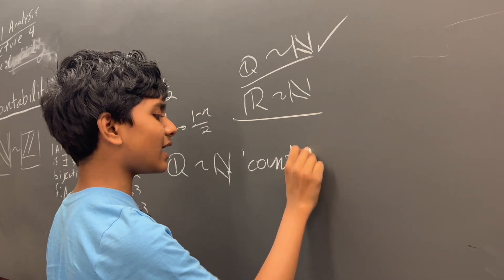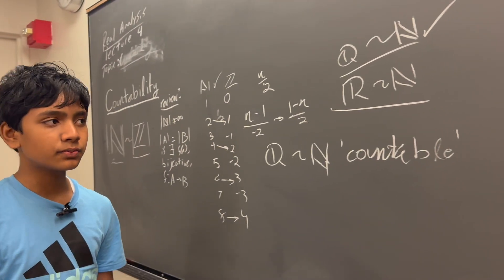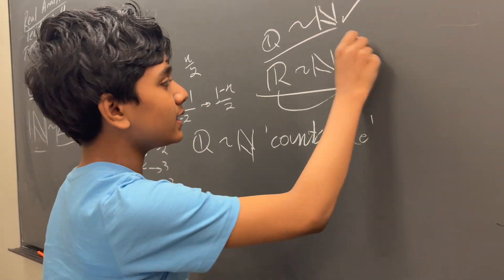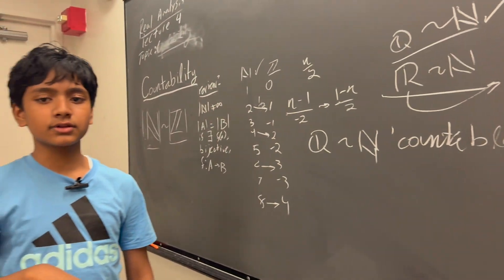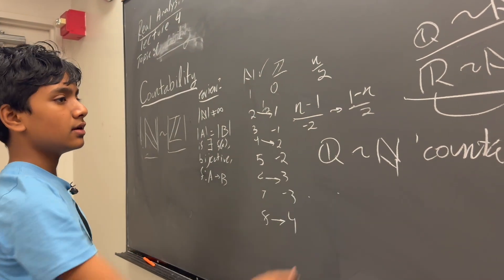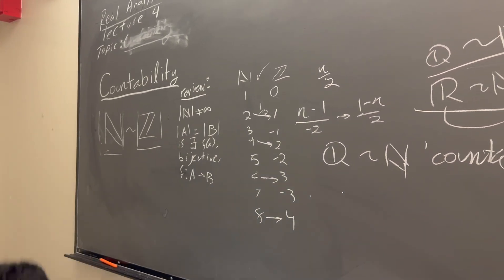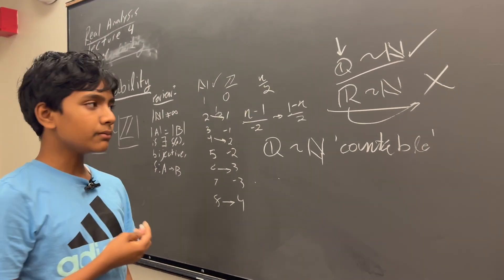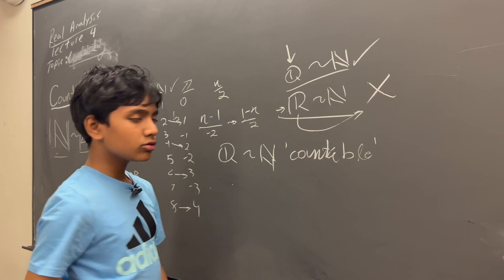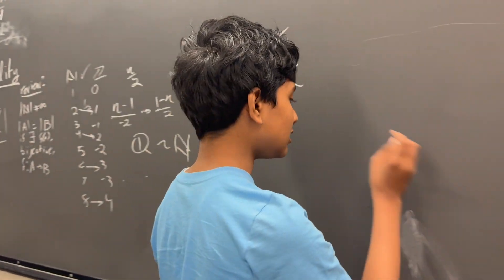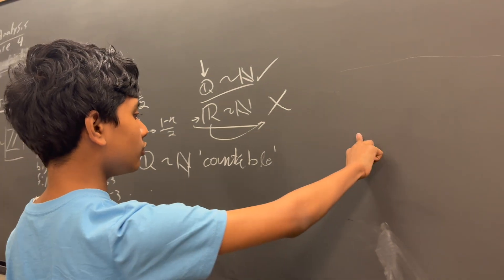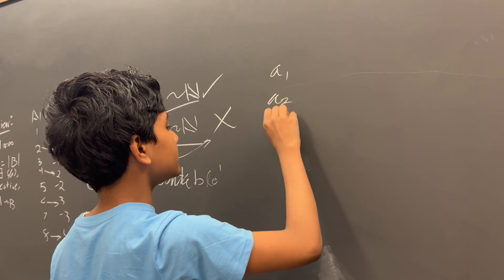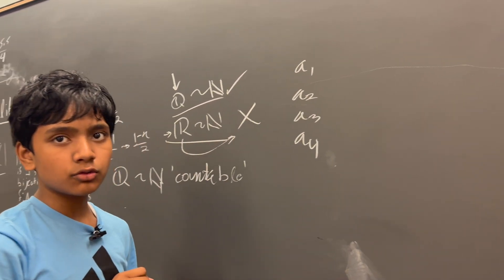Now, it seems like pretty much every set in the book is countable at this point. What about the reals? Why aren't they countable? Turns out we can't find a bijective relation between them and the natural numbers. What we want to do with a countable set is enumerate it. We have elements like a1, a2, a3, a4, so on and so forth.